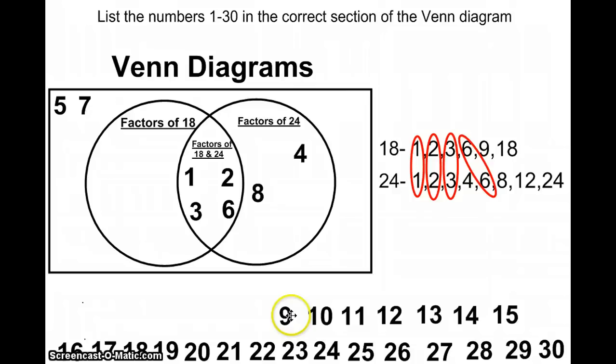9 is only a factor of 18, and I'm going to stop with 10. And it's not in either list so it would also go outside of your Venn diagram.